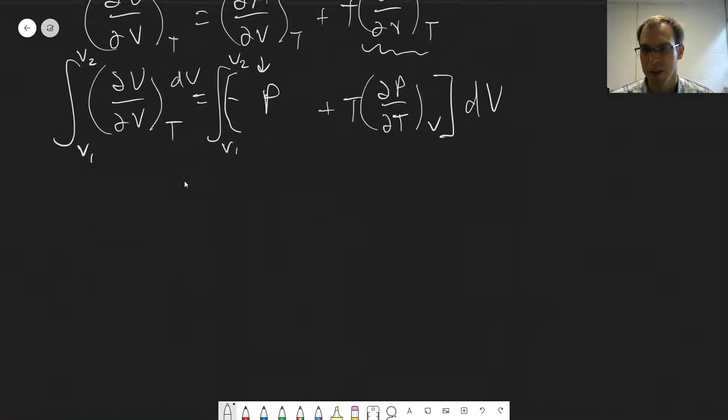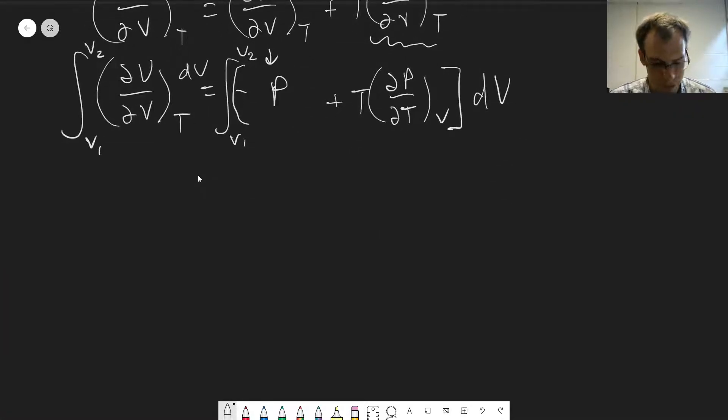And that would let us find the change in internal energy at constant temperature as we change the volume. We can double check for an ideal gas. We've asserted multiple times that at a constant temperature, the internal energy doesn't change. And we can show that with this relationship here. So dU/dV at constant T is equal to minus pressure plus T times dP/dT at constant V.